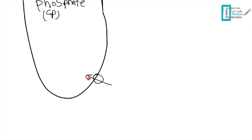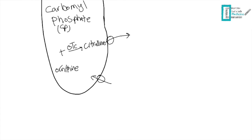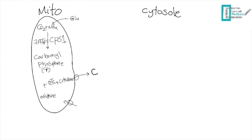In the second step, carbamoyl phosphate combines with ornithine, which is transported into the matrix by a protein transporter called the ornithine transporter. These two are combined by an enzyme called ornithine transcarbamylase, or OTC, to give us citrulline. Citrulline is then transported from the mitochondria matrix into the cytosol by citrulline transporters.